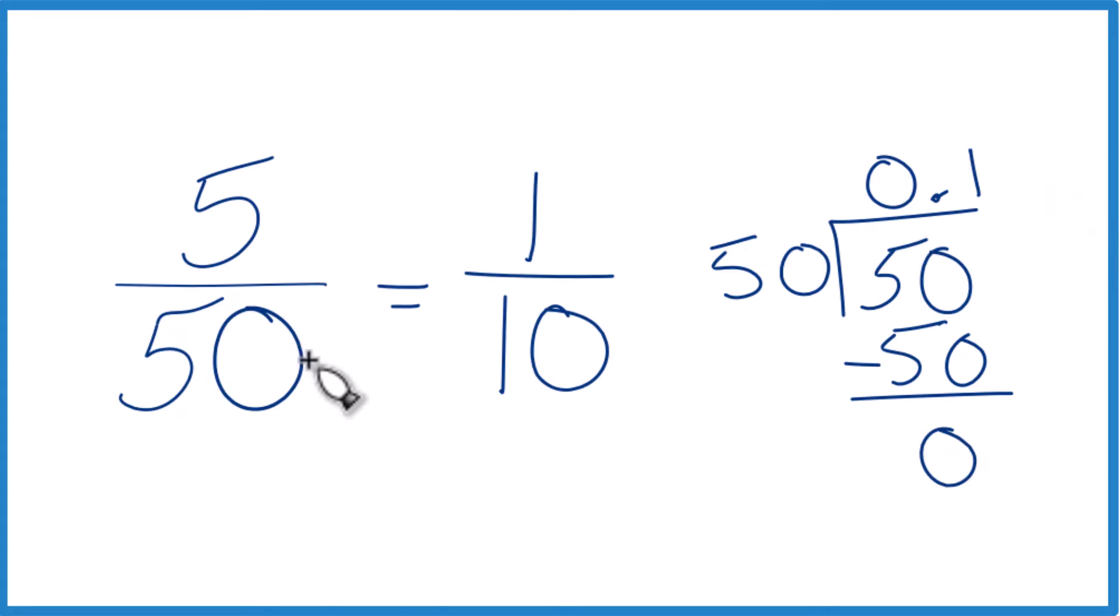Like we found before, 5 fiftieths, the fraction, is equal to the decimal 0.1 or the fraction 1 tenth. These are all the same thing.